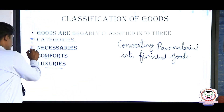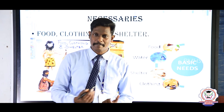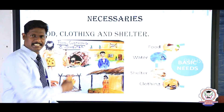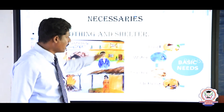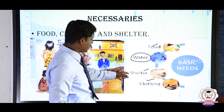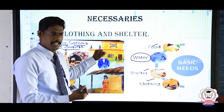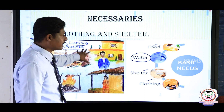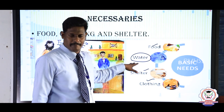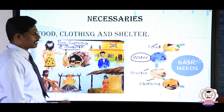Necessary goods are very essential for leading our life — they are indispensable. Without these goods we cannot live. Examples include food, cloth, shelter, and water. These are basic needs that all people in society depend on, whether rich, poor, or middle class. Without these goods, no one can live — such goods are called necessary goods.